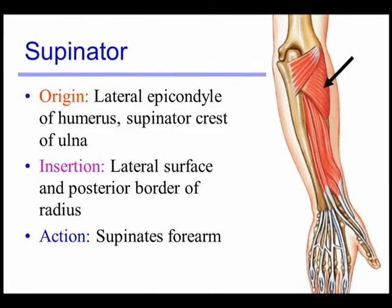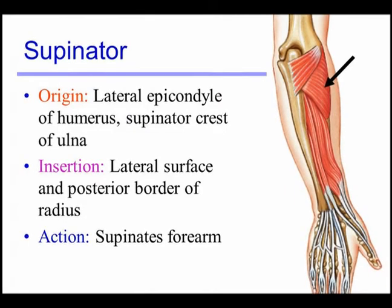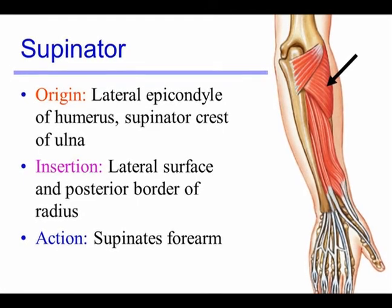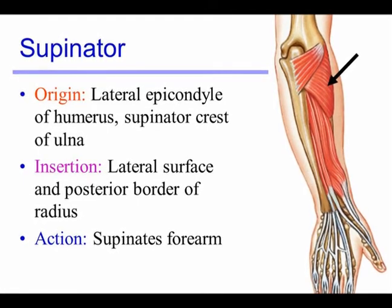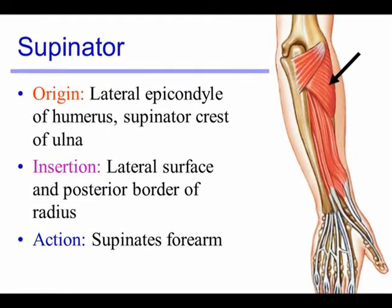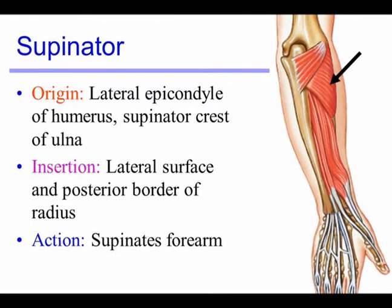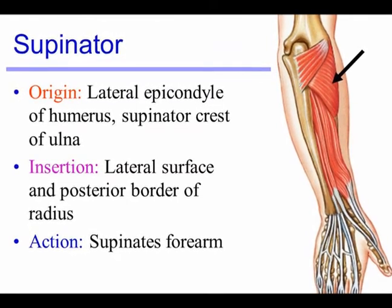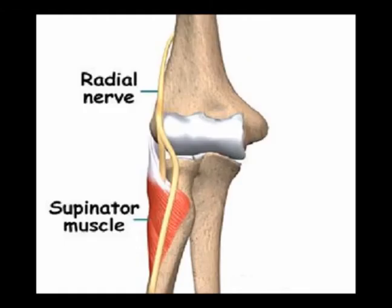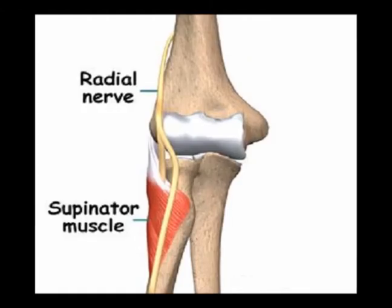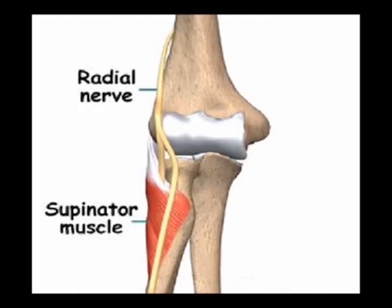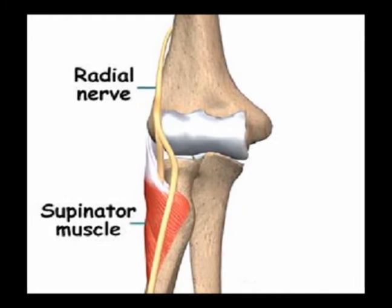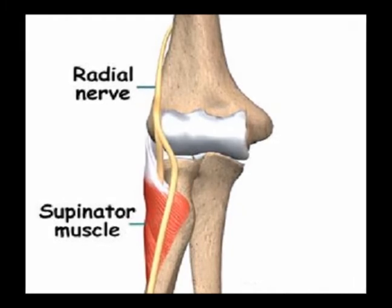Again, the supinator muscle is a posterior forearm muscle — it is in the deep class. The origin is the lateral epicondyle and supinator crest of the ulna. The insertion is the lateral surface of the radius. The innervation of the supinator muscle is the deep branch of the radial nerve, vertebral levels C7 and C8.